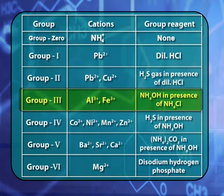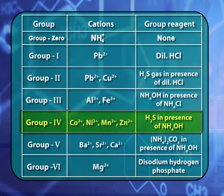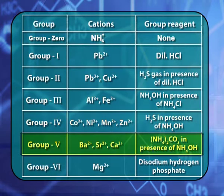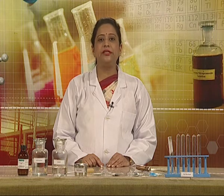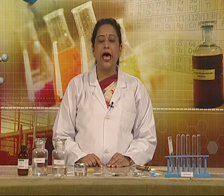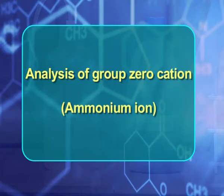Group 2 comprises of the lead ion and the copper ion. For group 3, we have aluminum ions and ferric ions. Group 4 comprises of four cations: cobalt ion, nickel ion, manganese ion, and zinc ion. For group 5, we have barium ions, strontium ions, and calcium ions. Group 6 has magnesium ion. The table clearly shows how different ions have been placed in different groups and what the group reagents are. Our today's aim is to analyze the cation of group 0, that is the ammonium ion.